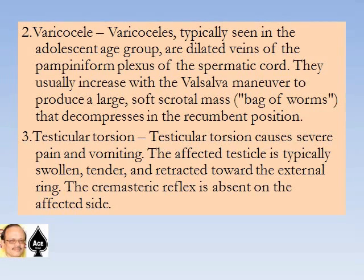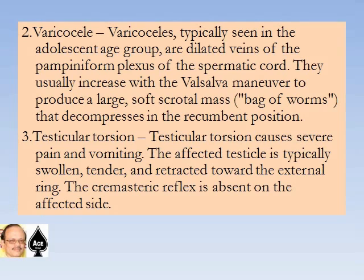Varicocele: typically seen in adolescents, varicoceles are dilated veins of the pampiniform plexus of the spermatic cord. They usually increase with the Valsalva maneuver to produce a large soft scrotal mass that decompresses in the recumbent position. Testicular torsion causes severe pain and vomiting. The affected testicle is typically swollen, tender, and retracted to the external ring; the cremasteric reflex is absent on the affected side.